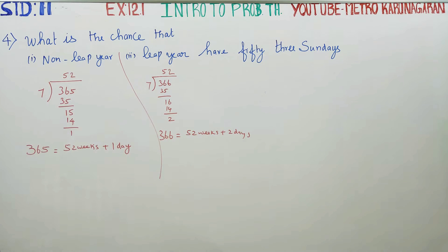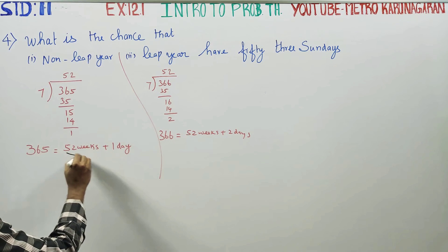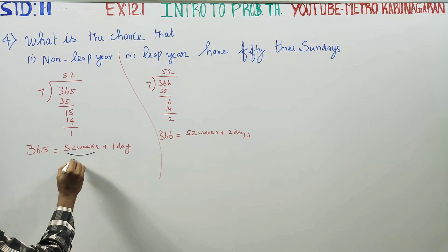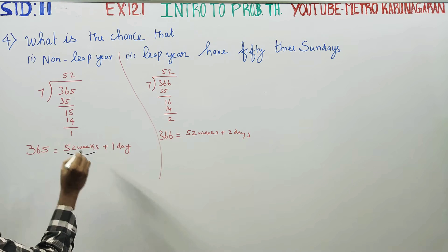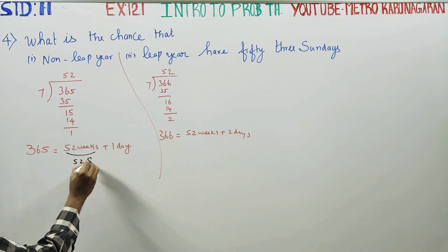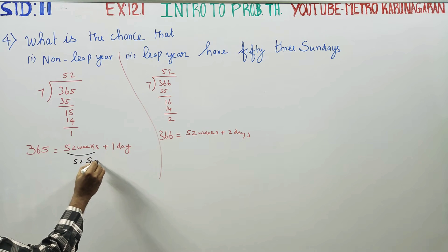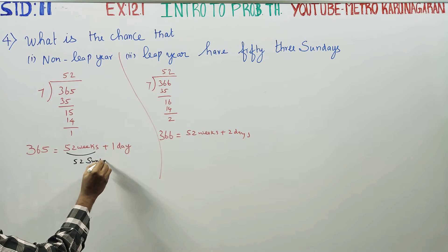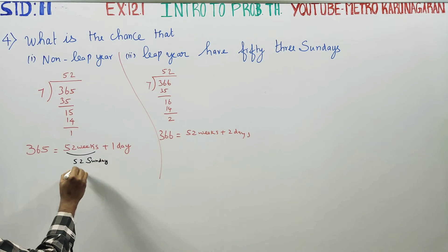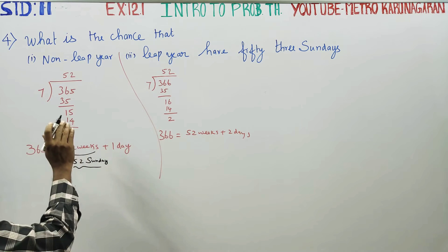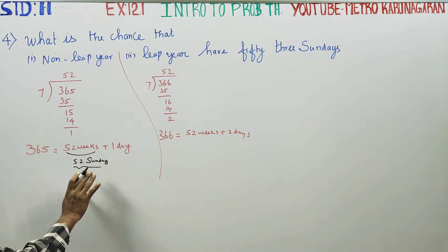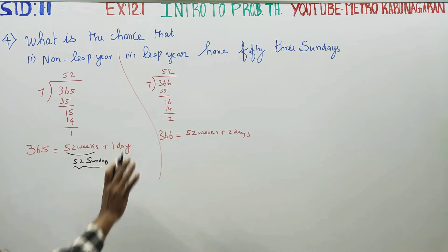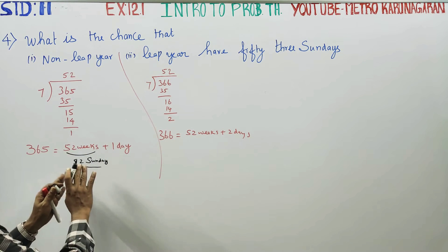For a non-leap year with 52 weeks, 52 Sundays are compulsory. The 1 extra day determines whether we get a 53rd Sunday.